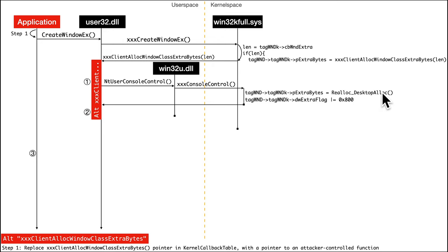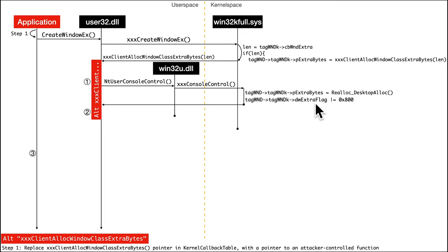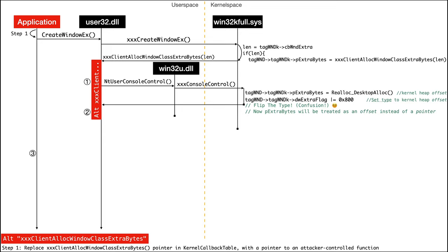It causes an allocation in the kernel desktop space and on the kernel heap. It's going to pass back the offset and put that into the pExtraBytes, and then it's going to set bit 11 in dwExtraFlags — consequently saying you should interpret pExtraBytes as an offset instead of a pointer. So the type is set to be interpreted as a kernel heap offset.